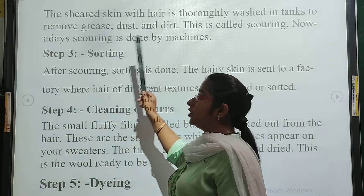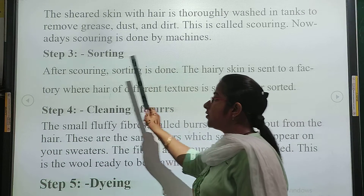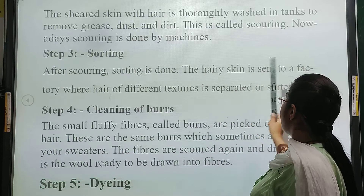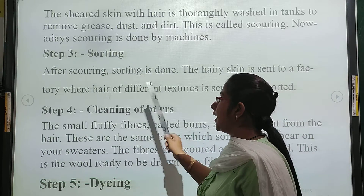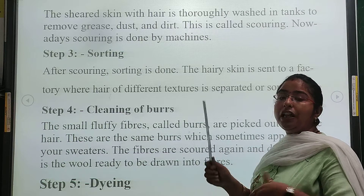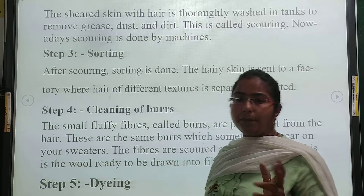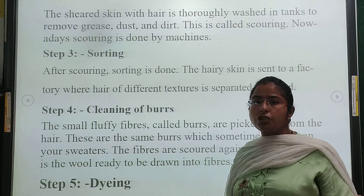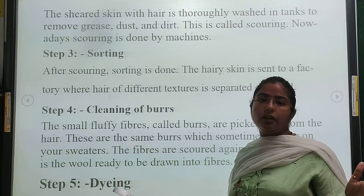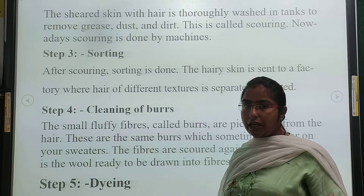Step 3 is sorting. After scouring, sorting is done. The fleece is sent to a factory where hair of different textures is separated or sorted. As we know, the sheep gives us two types of fiber: first is coarse hair and second is fine under-hair. The process of separating these is called sorting.